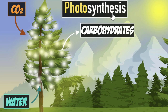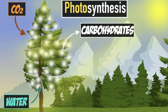Why is it called photosynthesis? Because the plants use 'photo,' which means light energy, to 'synthesize,' meaning to create carbohydrates from the raw materials. And why do they do that? Because carbohydrates are food for them.